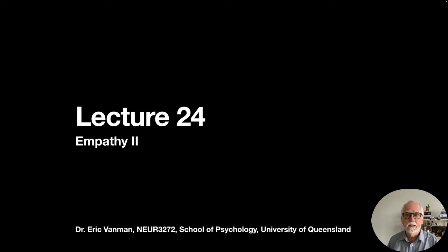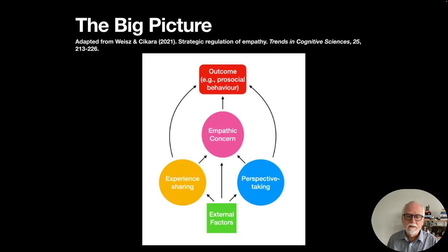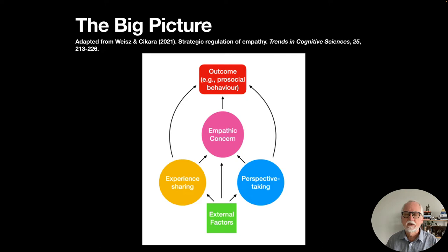Hello and welcome to another lecture in social neuroscience. This is our second lecture on empathy. In this lecture I want to focus on what prompts us to feel the pain of others. I'll begin by making a distinction between trait versus state empathy, and then we'll look at three broad examples of situational factors that cause us to feel empathy for others: social categories, kindchenschema and cuteness, and crying and tears. Going back to the big picture from the last lecture, we're looking at how experience sharing and perspective taking work together to give us empathic concern, and today I want to look at that green box on external factors.